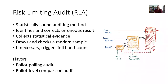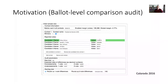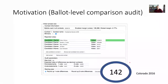For a ballot-level comparison audit, let's look at one example — the Colorado 2016 election results. I'm showing Philip Stark's tool that computes the sample size. You type in the numbers, choose a risk limit — here 5%, giving 95% confidence that the election result is correct — press calculate size, and the result is 142 ballots.